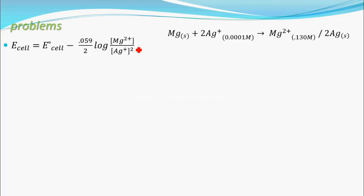Now substitute the values of these concentrations. Given in the equation: Mg²⁺ concentration of 0.130 and Ag⁺ concentration of 0.0001 molar. Given E° cell is 3.17. So, 3.17 minus 0.059 divided by 2 times log of 0.130 divided by (0.0001)². Try to simplify.